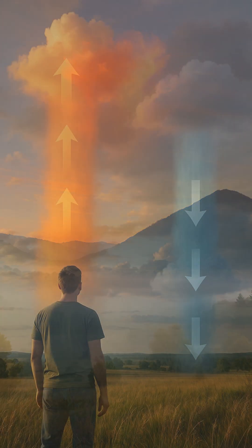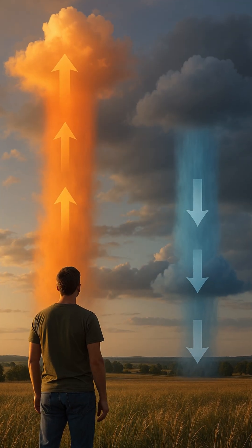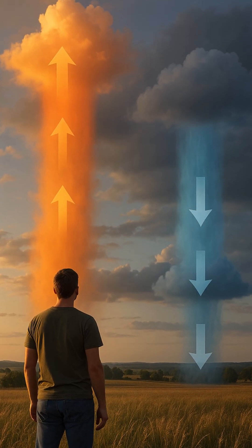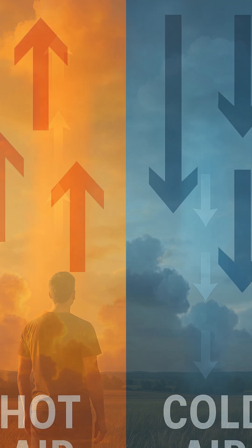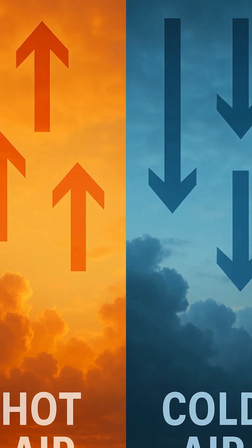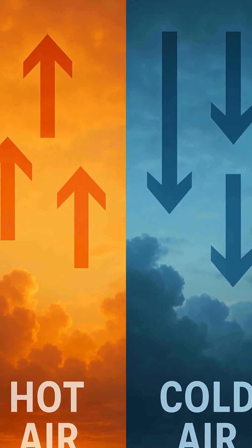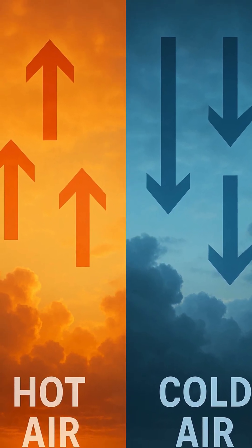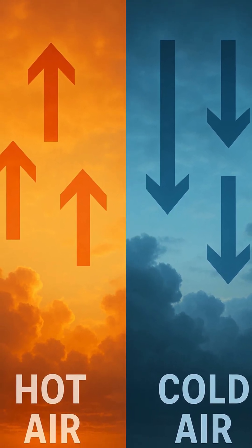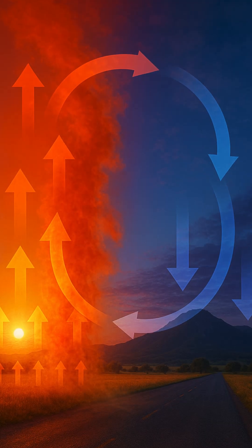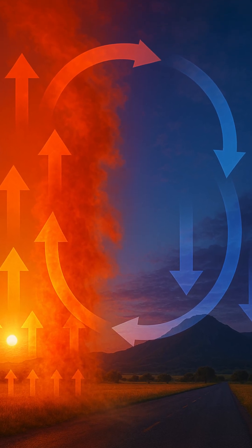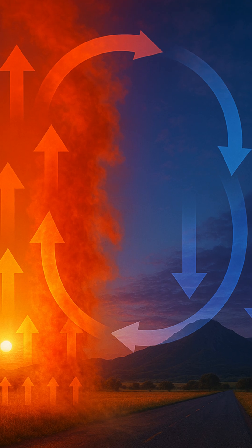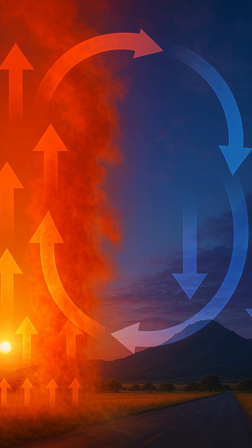Air pressure is the weight of the air pressing down on a given surface. When warm air rises and is replaced, we'll see pressure decrease in some areas and increase in others. The difference between the high pressure zones formed by cold air masses and the low pressure zones formed by warm air masses causes air to move.